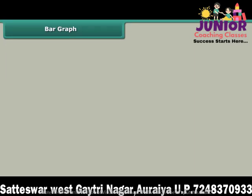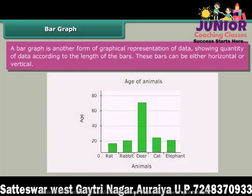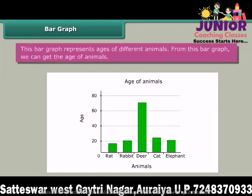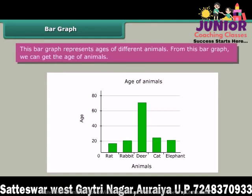Bar graph. A bar graph is another form of graphical representation of data, showing quantity of data according to the length of the bars. These bars can be either horizontal or vertical. This bar graph represents ages of different animals. From this bar graph we can get the age of animals.